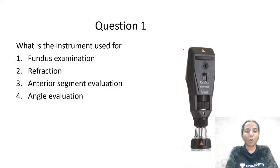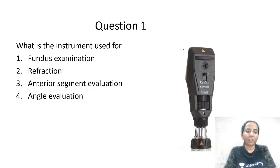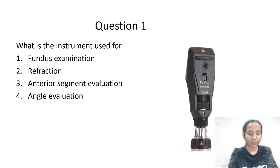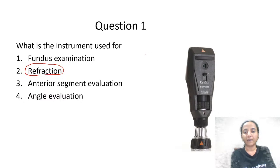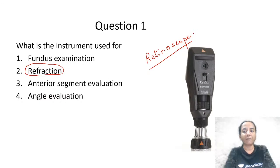Let's look at this first question: what is this instrument used for? The options are fundus examination, refraction, anterior segment evaluation, and angle evaluation. The correct answer is refraction. This instrument is a retinoscope, and it is used for refraction — that is, assessment of the refractive error of an individual.